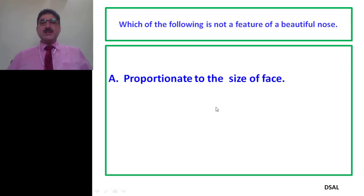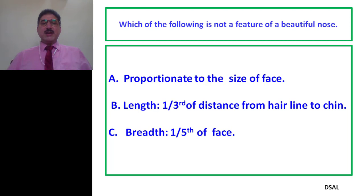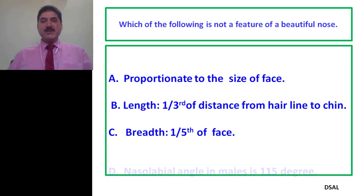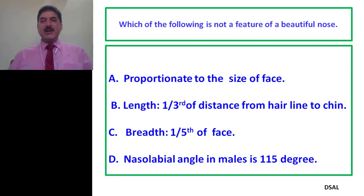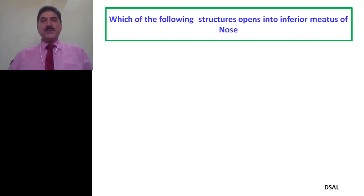Next question: which of the following is NOT a feature of a beautiful nose? A. Size of the nose should be proportionate to the size of the face. B. Length of the nose should be one-third of the distance from hairline to chin. C. Breadth of the nose should be one-fifth of the breadth of the face. D. Nasolabial angle in males is 115 degrees. D is the wrong option — the nasolabial angle in males is 90 degrees, not 115.